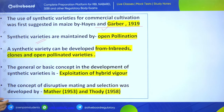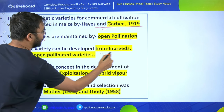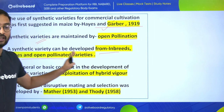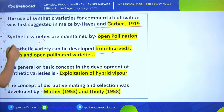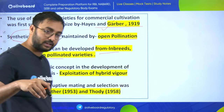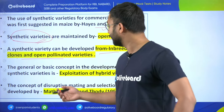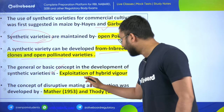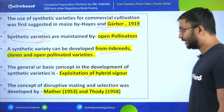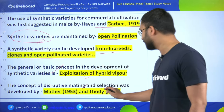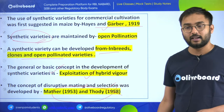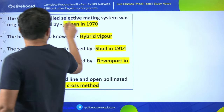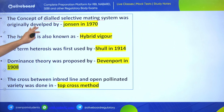When answering about synthetic varieties, options may include which statement is wrong, so understand this carefully. The basic concept in development of synthetic varieties is exploitation of hybrid vigor. The concept of disruptive mating and selection was developed by Mather and Jinks. The concept of diallel selective mating systems was originally developed by Johnson in the 1970s.